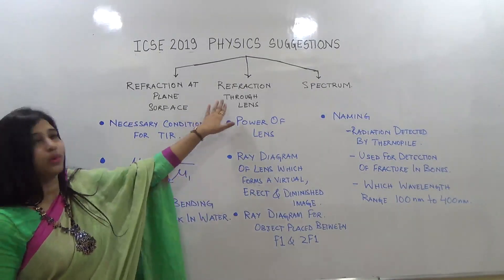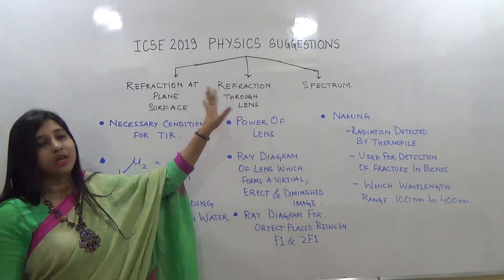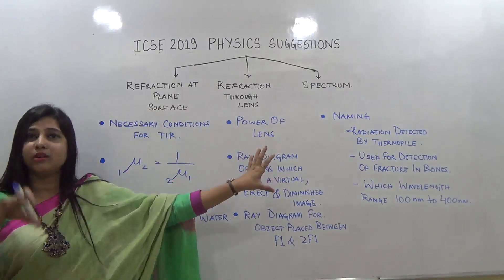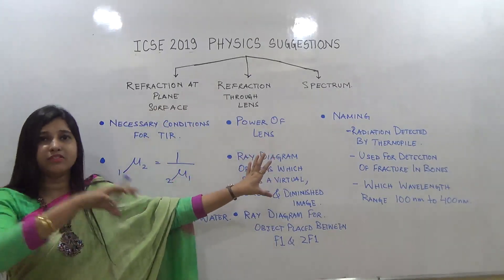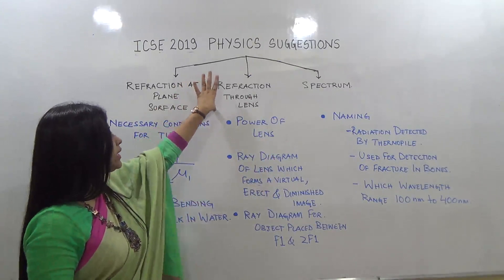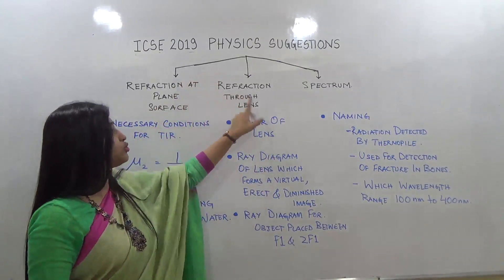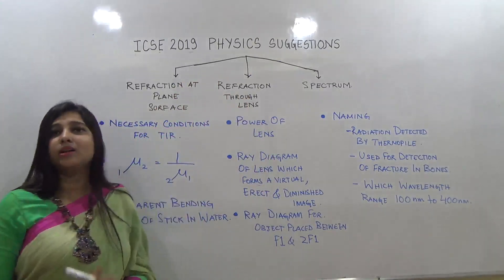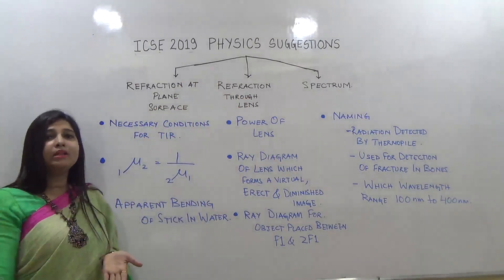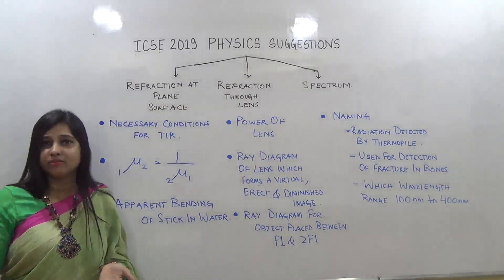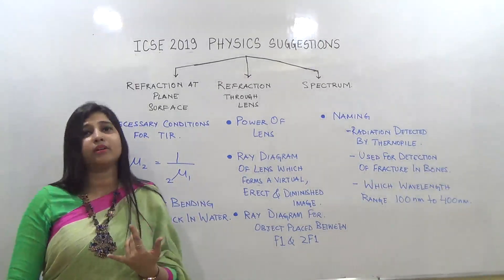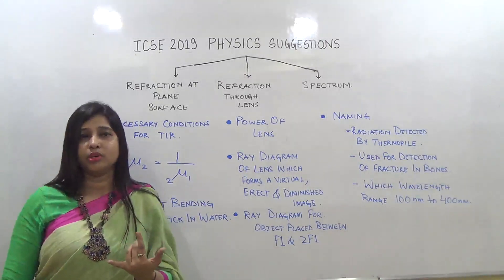All three of these chapters are under Light. Next is refraction through lens. Under refraction through lens, there are many things covered, but the important ones are the ray diagrams, which are very important.